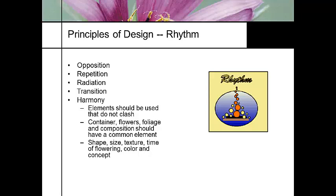Harmony — you want to use elements that don't clash. Container, flowers, foliage, and composition should all complement the same element. You want to use shapes, size, and textures to complement, not to clash.